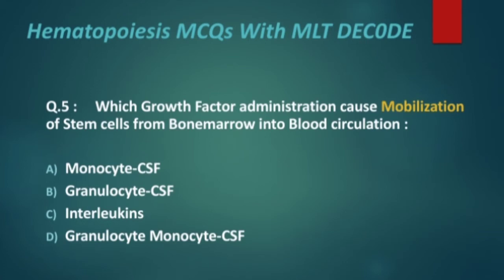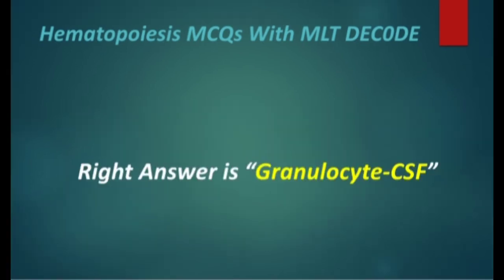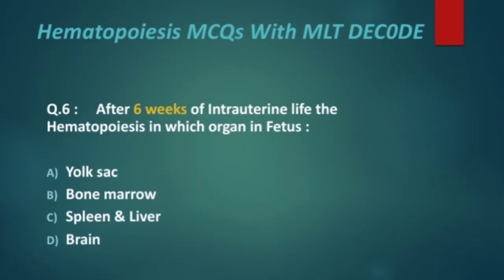Next MCQ: which growth factor administration causes mobilization of stem cells from bone marrow into blood circulation — monocyte colony-stimulating factor, granulocyte colony-stimulating factor, interleukins, or granulocyte-monocyte colony-stimulating factor? The right answer is granulocyte colony-stimulating factor (G-CSF).